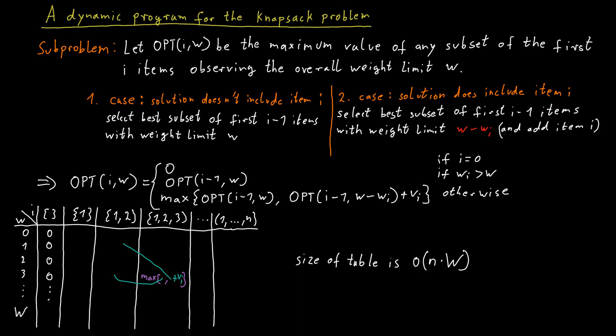This may seem like an efficient, meaning polynomial time algorithm, but it's not because this capital W is a number that is presented in the input. And we said, unless otherwise specified, numbers encoded in an input are always encoded in binary.